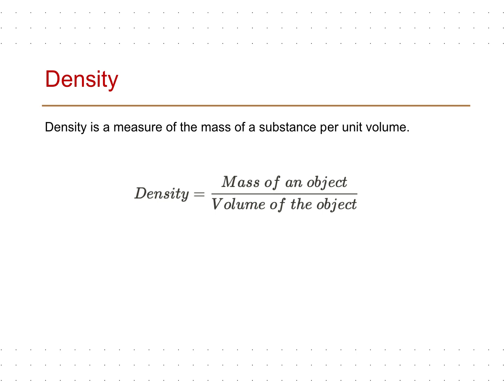We have learned earlier that we measure the mass of an object in grams and the volume in milliliters or centimeter cubed. Therefore, density is typically measured in the units of grams per milliliter or grams per centimeter cubed.